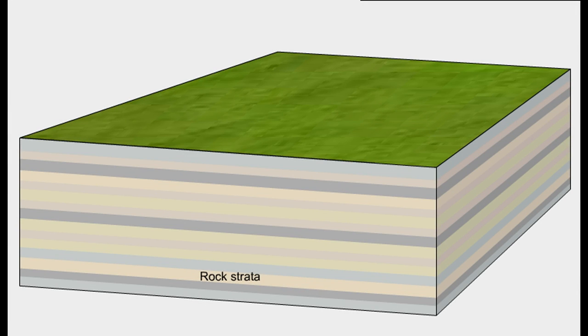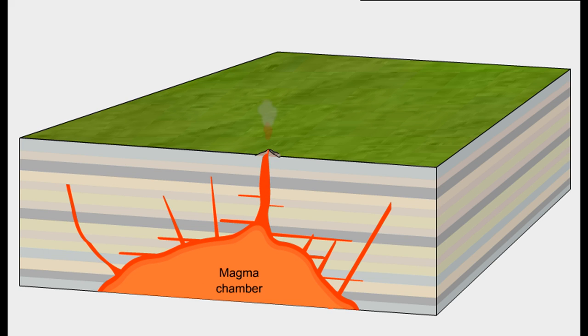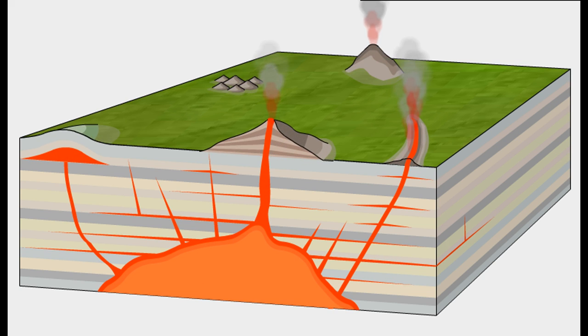Intrusive volcanic activity takes place beneath the Earth's surface. When magma is forced to rise to the surface, only a small amount of it actually makes it to the top. The majority of the magma is intruded into the crust, where it solidifies and forms a range of features.